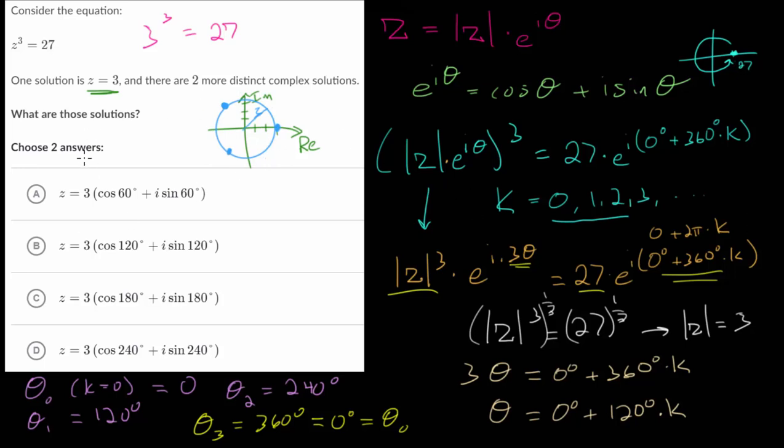Now, when we consider the answer choices, we know the answers have to be written in their polar form rather than this exponential form, but the magnitude of 3 is out front, and we know the angles have to be 120 and 240. So, it looks like choices B and D are the correct solutions, and you can test these by raising everything to the third power.